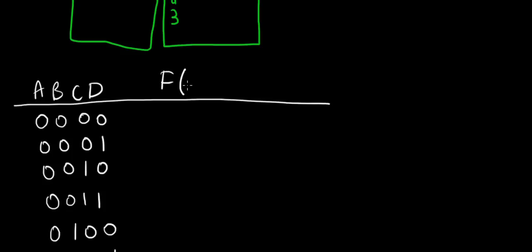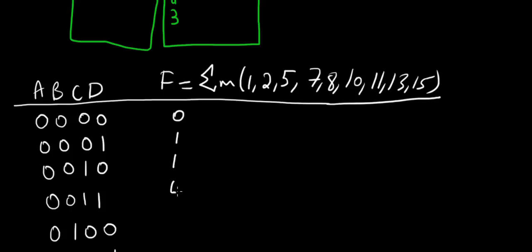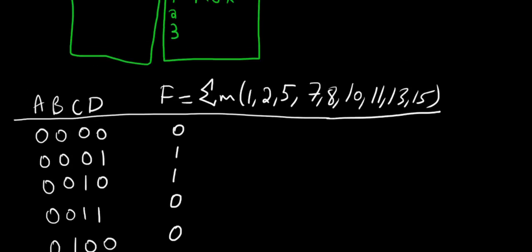Then we fill in the output column. The minterms are 1, 2, 5, 7, 8, 10, 11, 13, and 15 as stated in the problem. So minterm 0 is 0, minterm 1 is 1, minterm 2 is 1, minterm 3 is 0, minterm 4 is 0, minterm 5 is 1, minterm 6 is 0, minterm 7 is 1, minterm 8 is 1, not 9, minterm 10 is 1, minterm 11 is 1, minterm 13 is 1, and minterm 15 is 1.